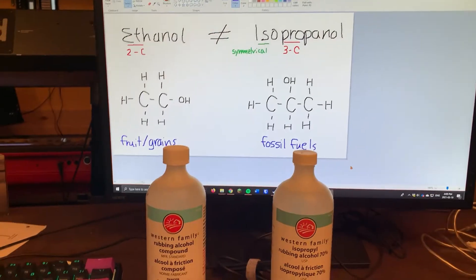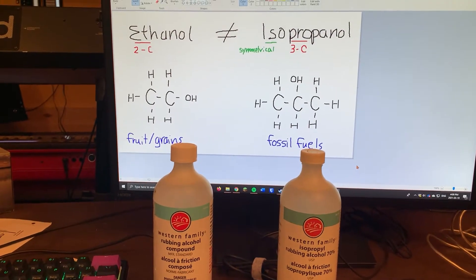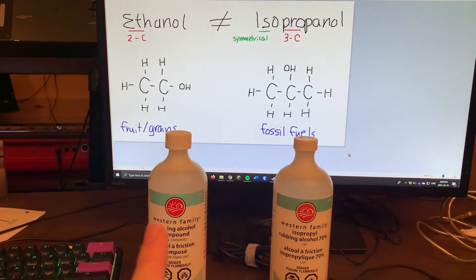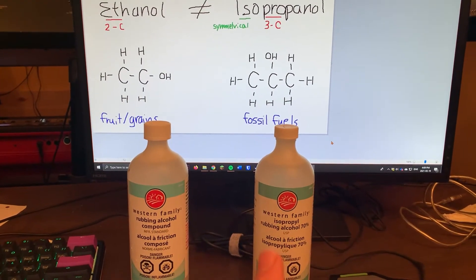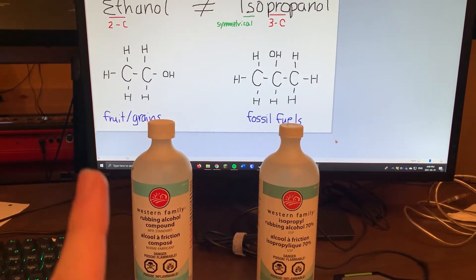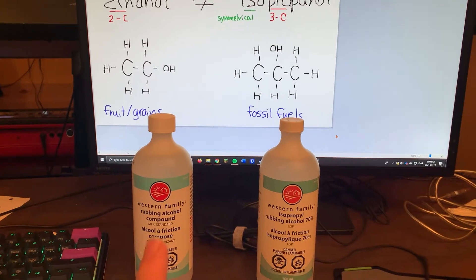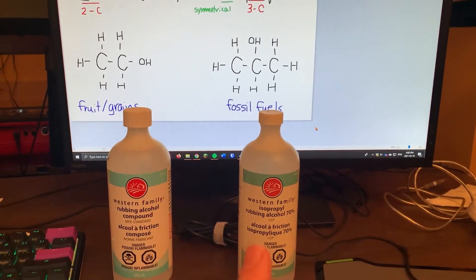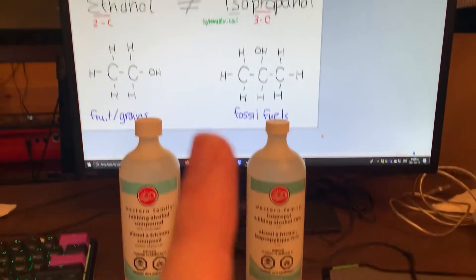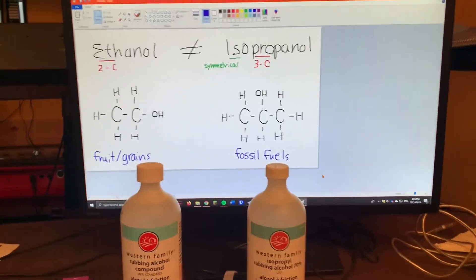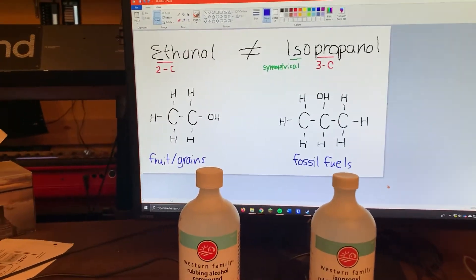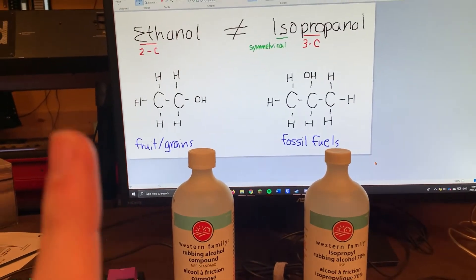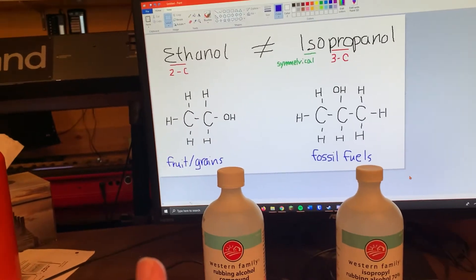Hi there, Jeremy from the future here. Just to clarify my mistake: ethanol is not the same thing as isopropyl rubbing alcohol. Ethanol is what we put in all our alcoholic beverages. Isopropyl rubbing alcohol, on the other hand, is toxic — if you drink it, you will die. Ethanol is derived from fruit and grains, which is why we call it grain alcohol.